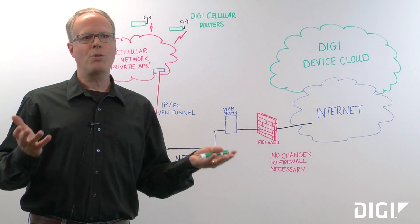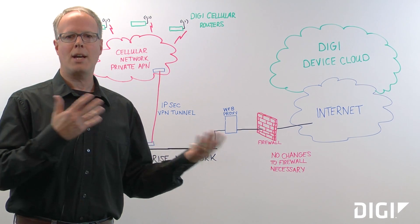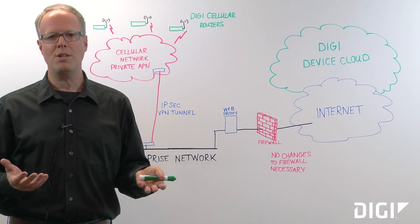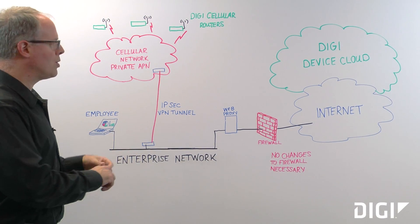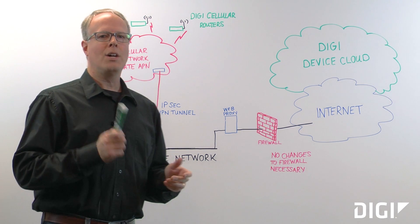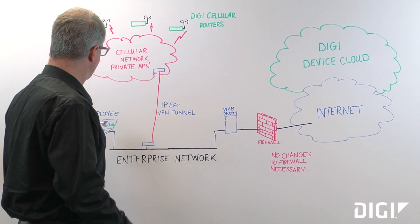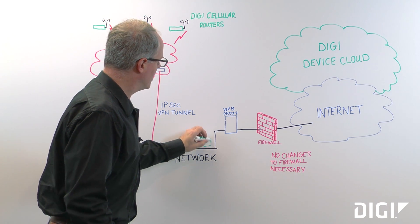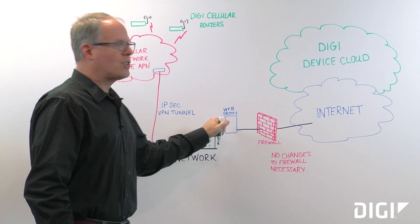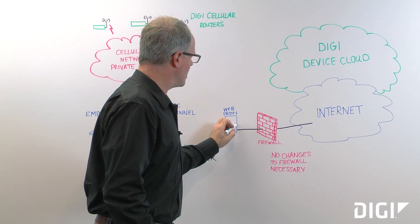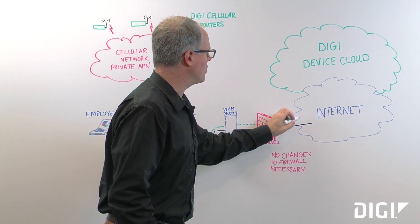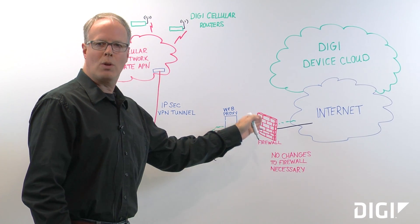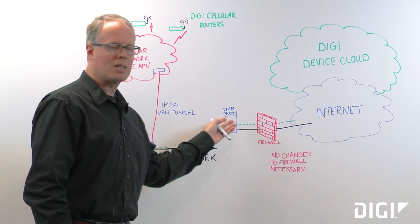In today's world, most employees do need to get out to the internet to do everyday business tasks. You might have your CRM solution or other applications out on the internet, so employees do need to be able to access the internet. To accomplish that, their web browser simply detects that there's a web proxy on the network, attaches to it, and then the web proxy sends the connection out to the internet through the firewall. The IT manager basically configures the firewall to allow communication from the web proxy out to the internet.